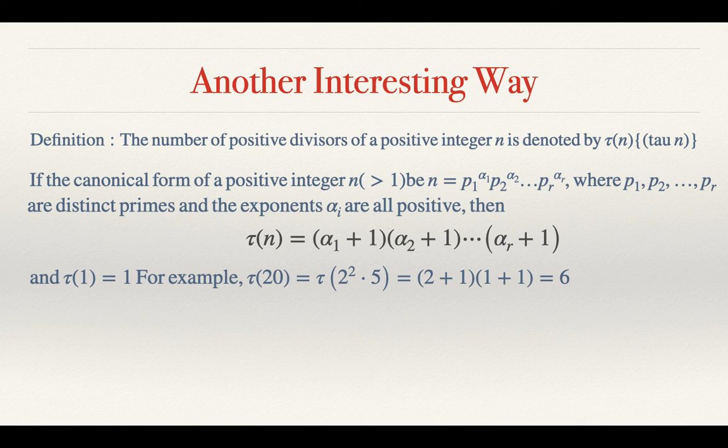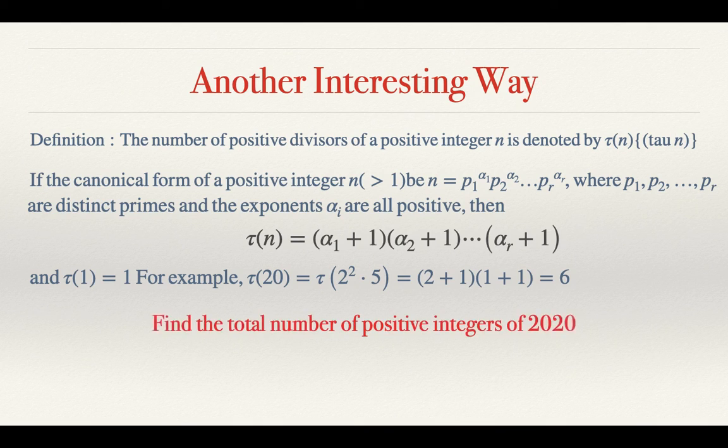Suppose I am taking n equals 20. Now our first step will be the prime factorization of 20, which is 2 squared times 5. Now for 2 squared we have to take the power and add 1 with it. So for 2 squared we have 2 plus 1, and for 5 the power is 1 so we have 1 plus 1. So we have 3 times 2 which is 6.